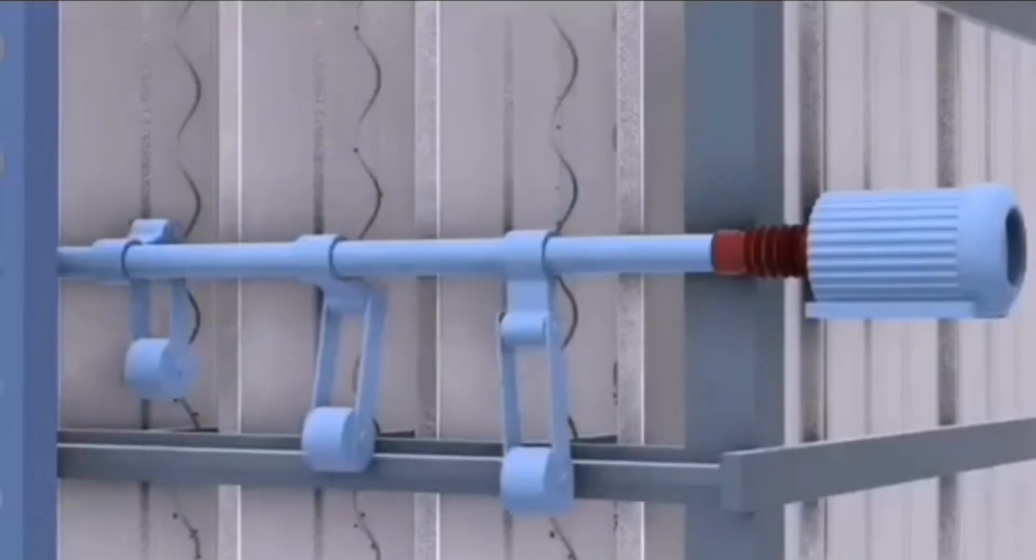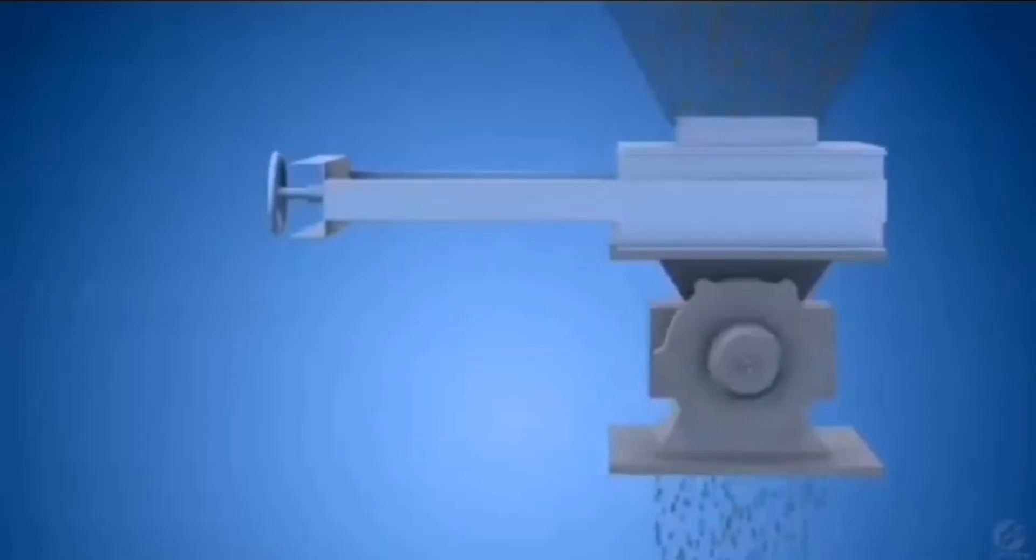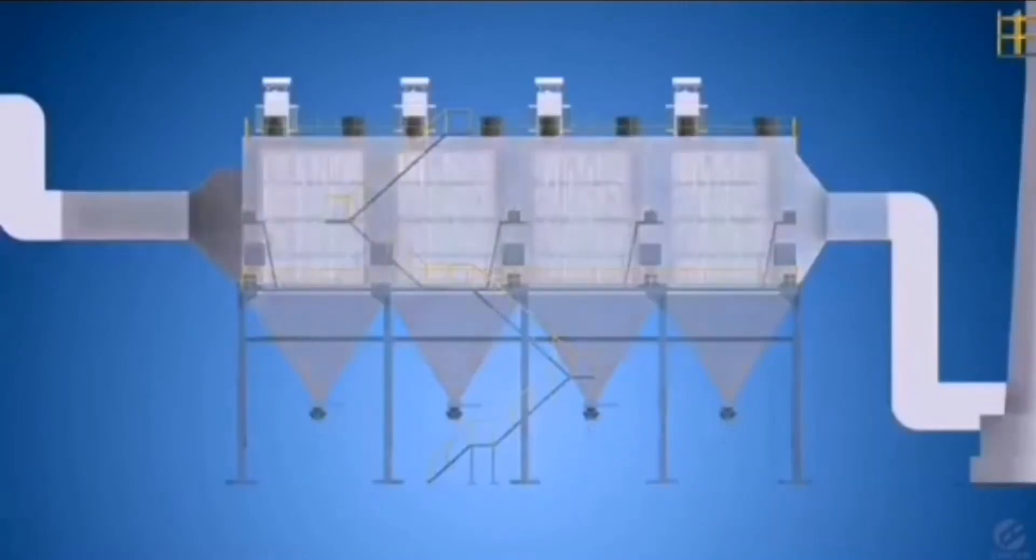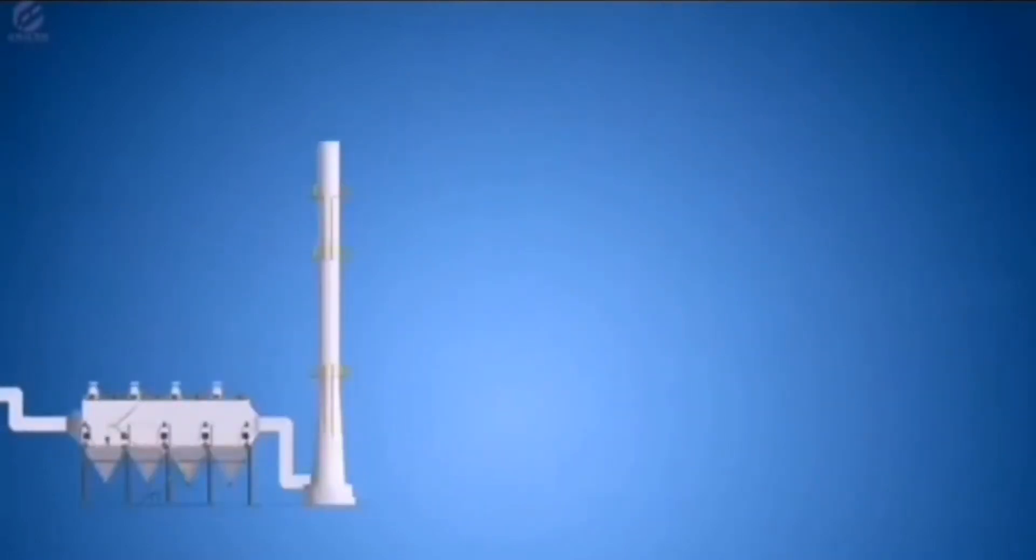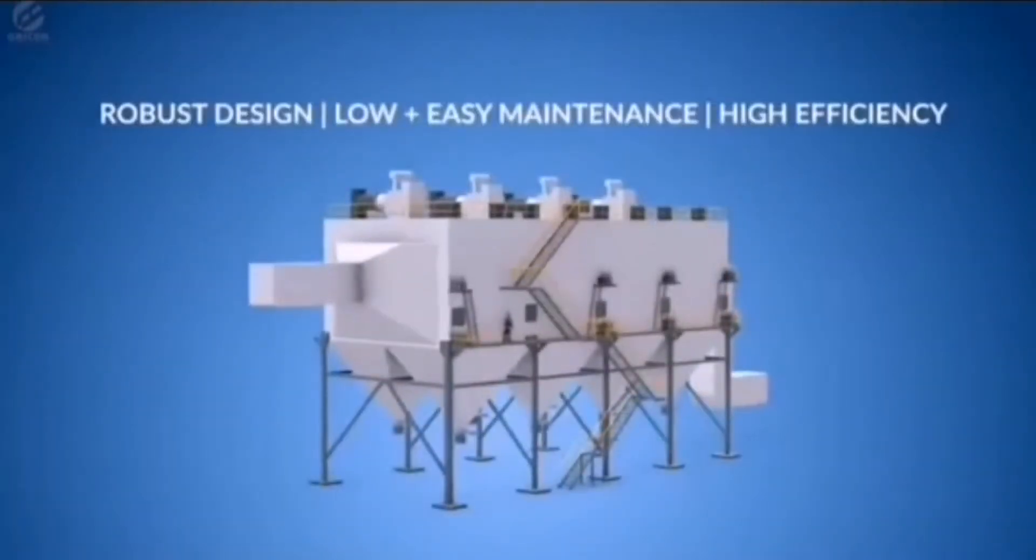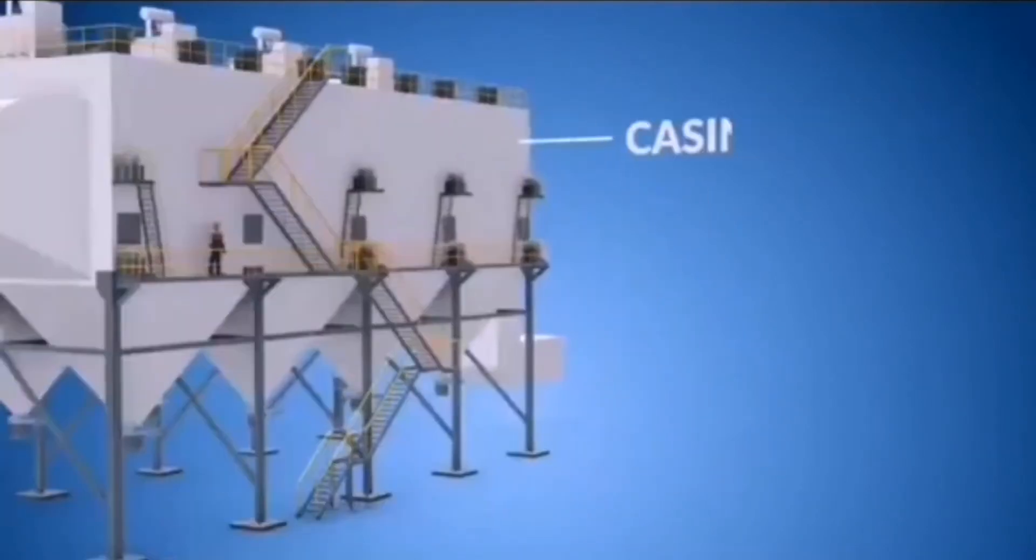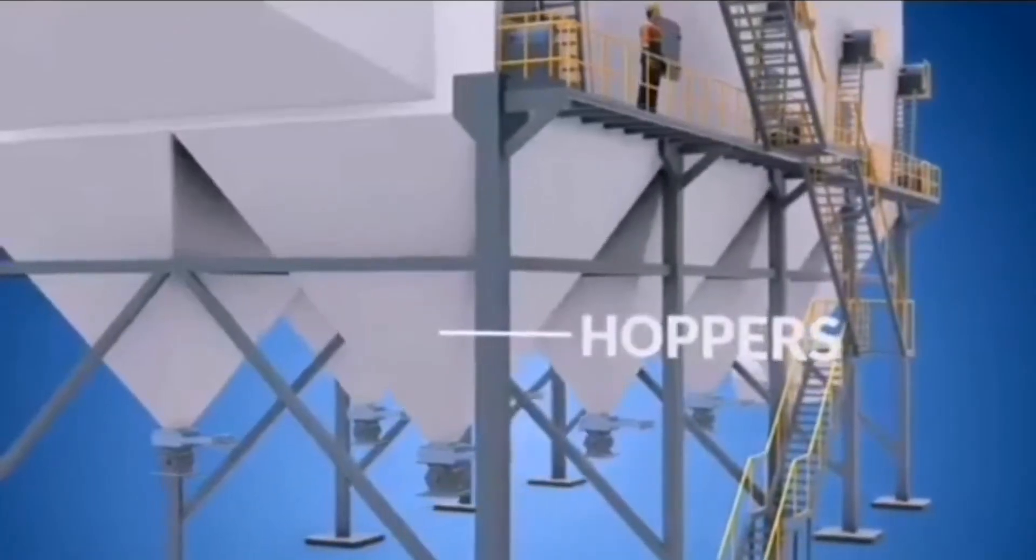The collected particles are then dislodged from the electrodes to the hopper by means of rapping. The hopper is evacuated continuously through the dust handling systems.